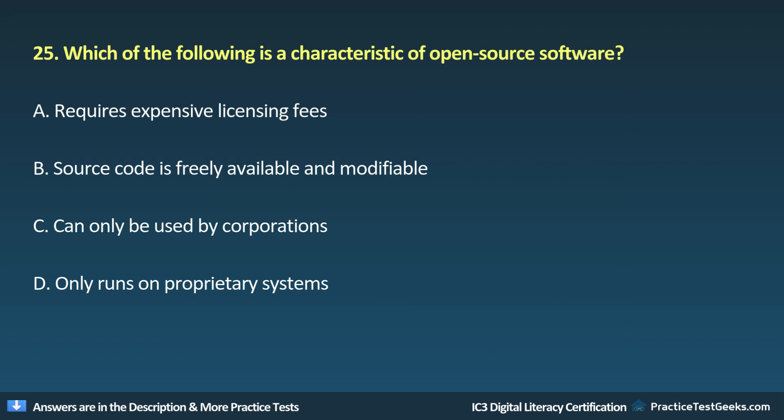Question 25: Which of the following is a characteristic of open-source software? A. Requires expensive licensing fees. B. Source code is freely available and modifiable. C. Can only be used by corporations. D. Only runs on proprietary systems.